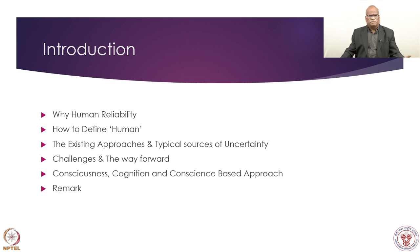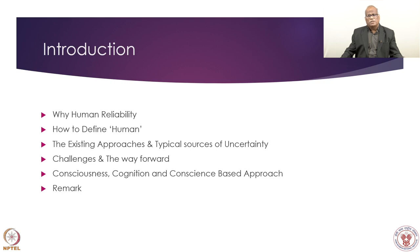In existing approaches, when we do a risk assessment, the uncertainty estimates tend to be conservative — if I have an error factor of 10, it doesn't convey anything meaningful. This is one of the challenges. The existing approaches will be discussed, and then consciousness, cognition, and conscience are being incorporated because nowadays we have to focus on security risk assessment — probabilistic security risk assessment — where conscience becomes very handy. Safety and security are now both covered in most documents, as they are intimately connected.